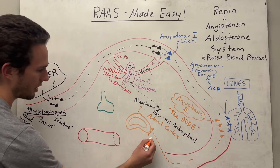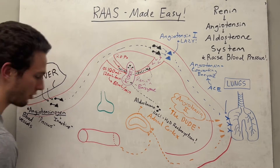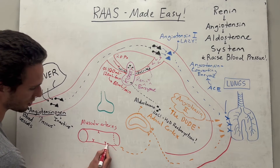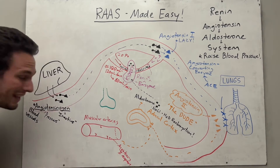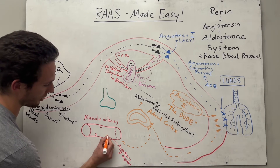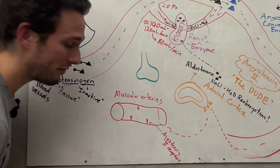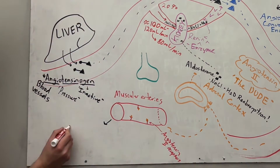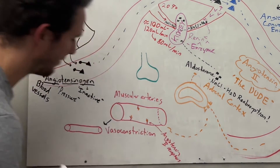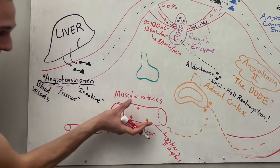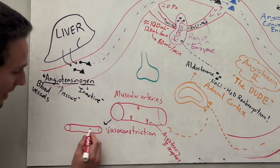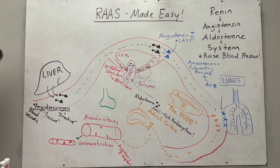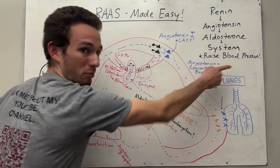Next, angiotensin 2 also talks to muscular arteries, which also have angiotensin 2 receptors. When angiotensin 2 binds to those receptors, the blood vessel itself will actually constrict — vasoconstriction. If we vasoconstrict the vessels, all the blood inside is compressed, meaning there will be a greater force being exerted on the walls of the arteries — thus, obviously, increasing blood pressure.